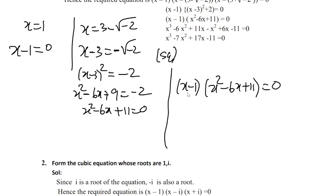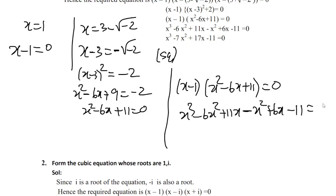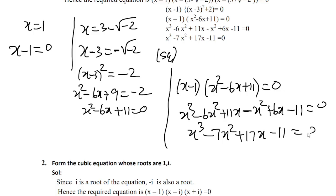So our cubic equation becomes (x minus 1)(x² minus 6x plus 11) equals 0. Expanding: x³ minus 6x² plus 11x minus x² plus 6x minus 11 equals 0, giving x³ minus 7x² plus 17x minus 11 equals 0. This is the factor method result.